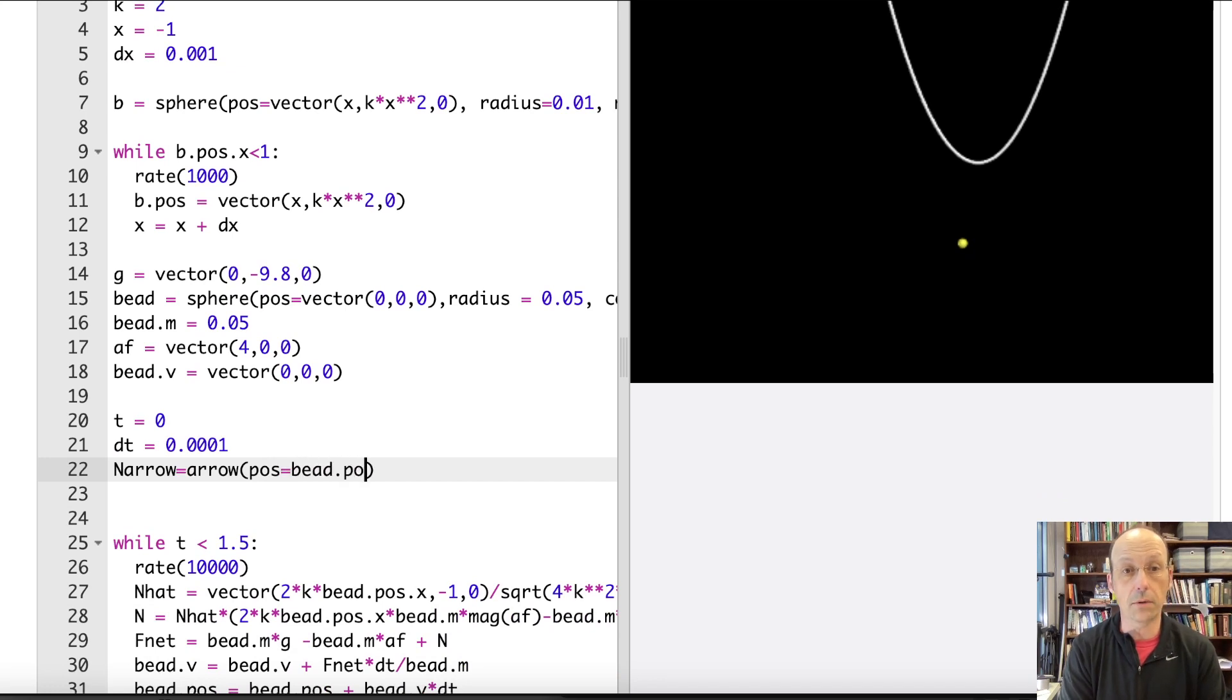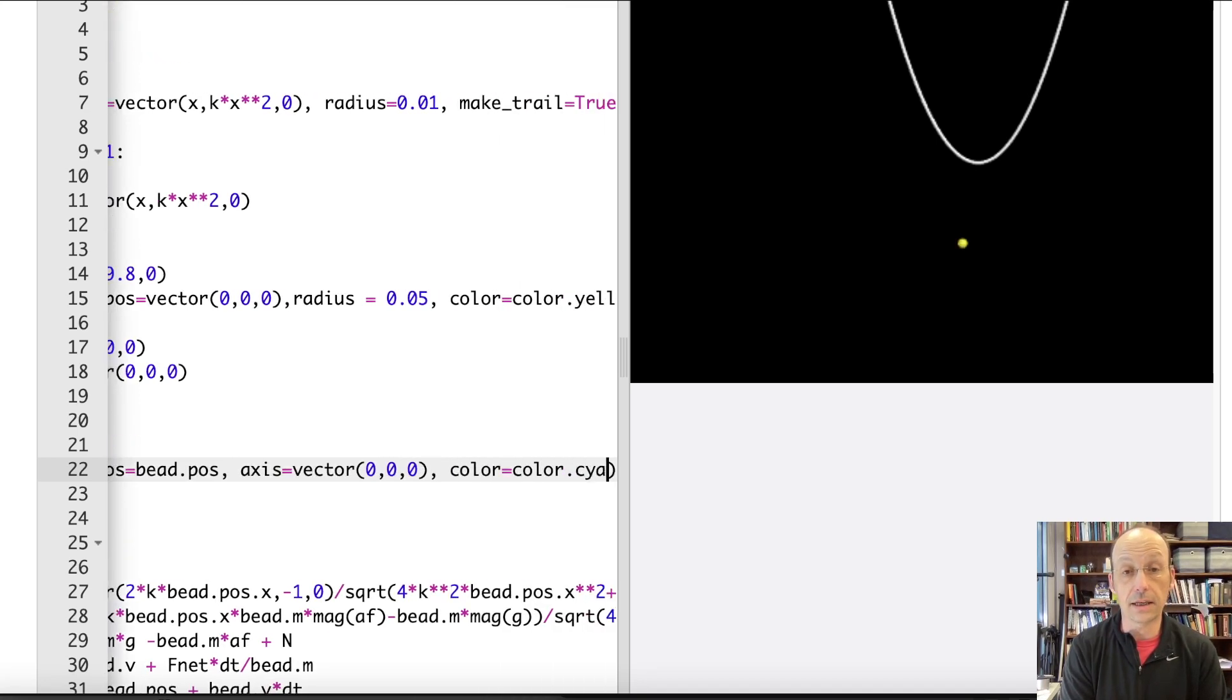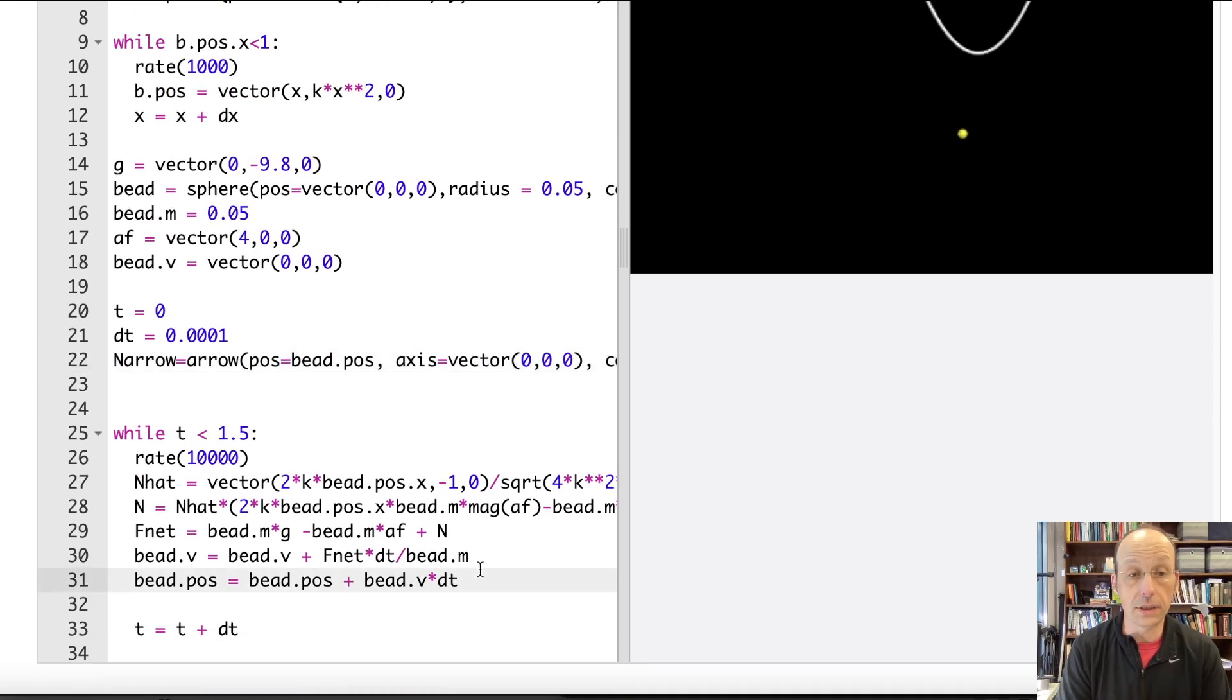Position is equal to bead.pos. Axis is going to be equal to vector 0, 0. I'm just going to set it to 0 first because I haven't calculated it yet. And then let's make it color.cyan. Now down here, what I want to do is after I move the bead, I'm going to move the arrow because I want the arrow to be attached to the bead. So I can say n arrow.pos equals bead.pos. And then the axis arrow.axis equals n. Let's just see what happens.